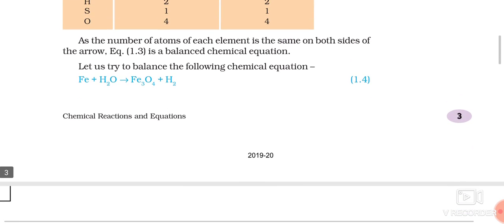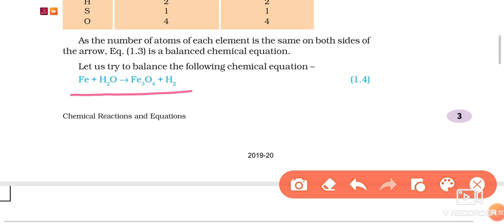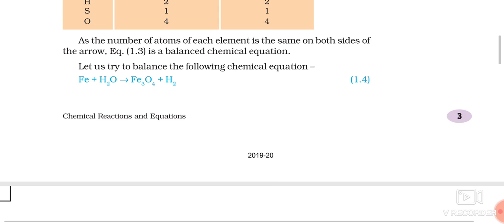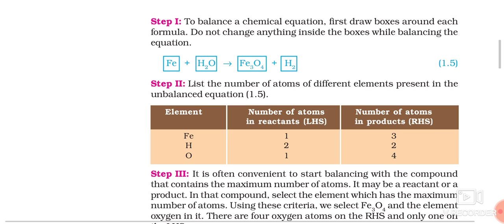Let's take another example: Fe + H2O → Fe3O4 + H2. Let us check whether this is balanced or unbalanced. On the left hand side there is one Fe atom, but on the right hand side there are three iron atoms. The number of atoms is not equal, so this is an unbalanced equation. Now we will follow the steps from the NCERT book to understand how to balance this chemical equation.